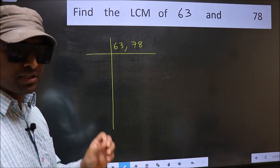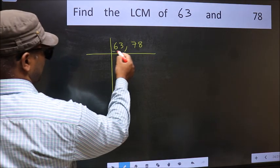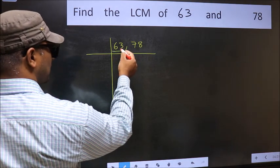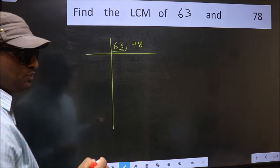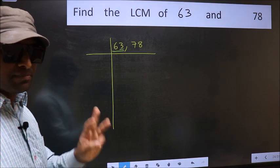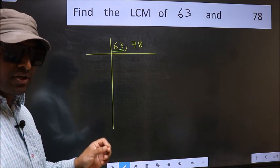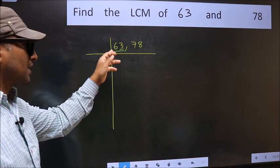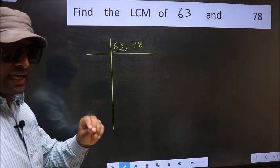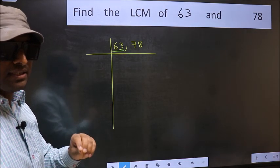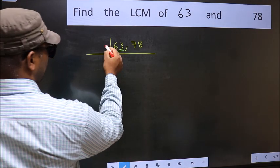Now focus on the first number which is 63. In this number, the last digit is 3, not even. So this is not divisible by 2. Next prime number is 3. To check divisibility by 3, we should add the digits. 6 plus 3, we get 9 and 9 is divisible by 3. So this number is also divisible by 3. So take 3.